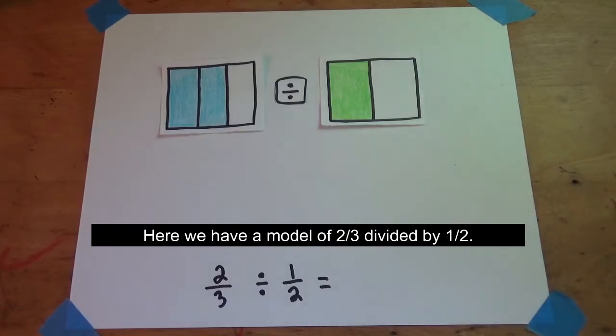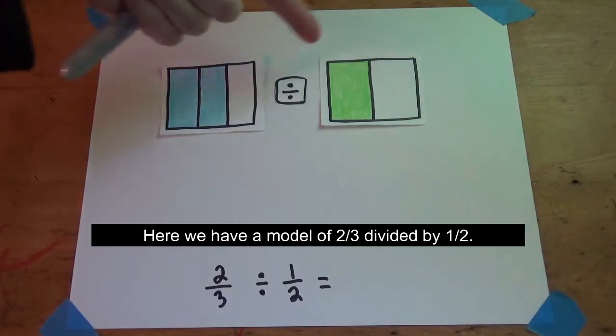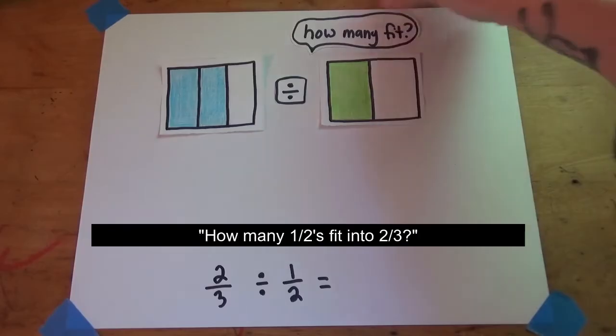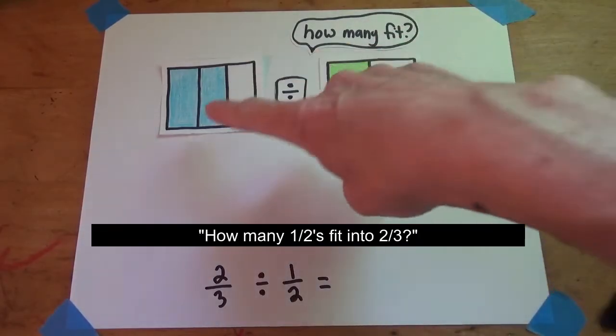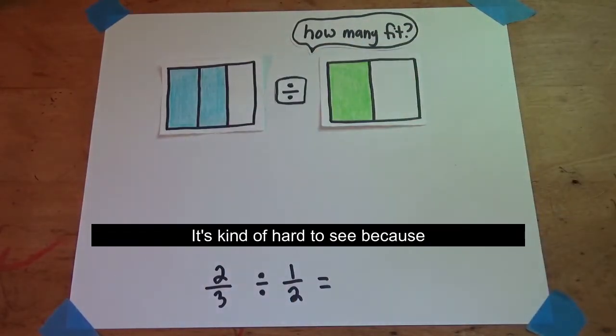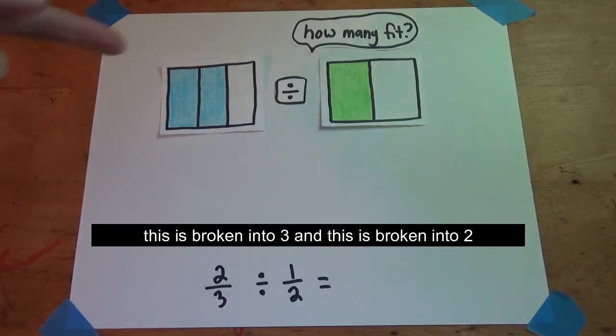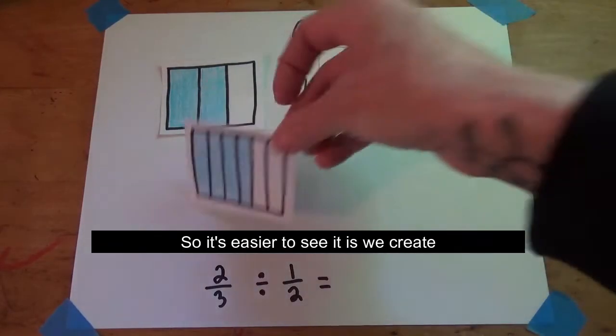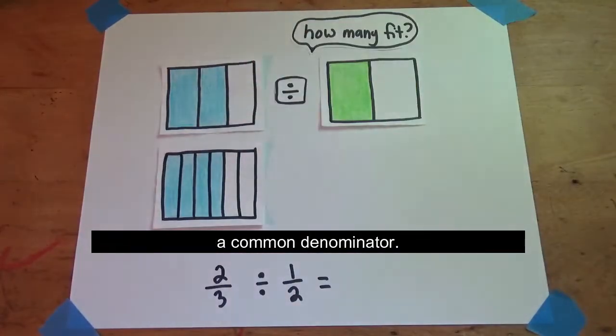Here we have a model of two-thirds divided by one-half. What we're really asking is how many halves fit into two-thirds. It's kind of hard to see because this is broken into three and this is broken into two, so it's easier to see if we create a common denominator.